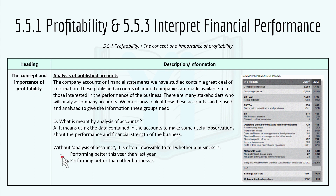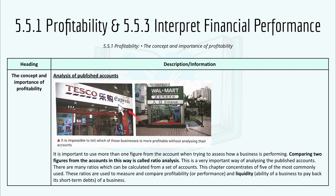Without the analysis of accounts, it's often impossible to tell whether a business is performing better this year than last year, or performing better than other businesses. It is impossible to tell which businesses, like Tesco or Walmart, are more profitable without analyzing their accounts. It is important to use more than one figure from the accounts when trying to assess how a business is performing. Comparing two figures from the accounts in this way is called ratio analysis, and this is a very important way of analyzing published accounts.